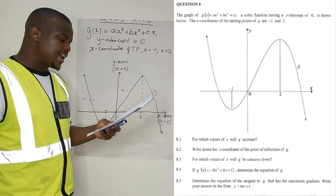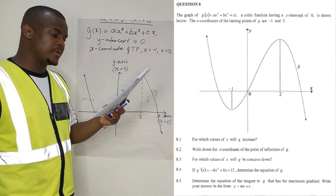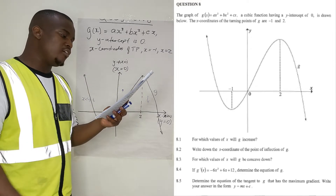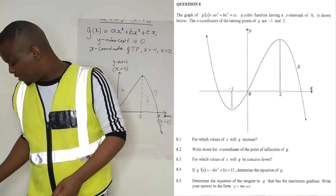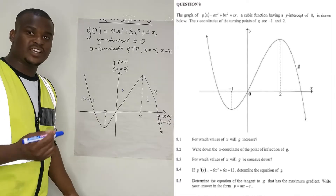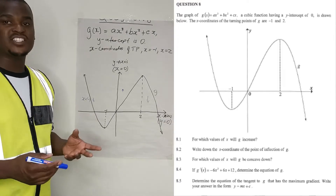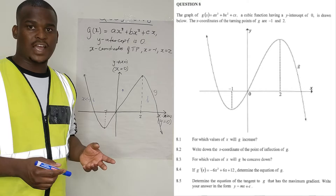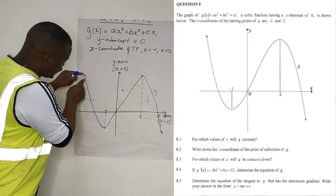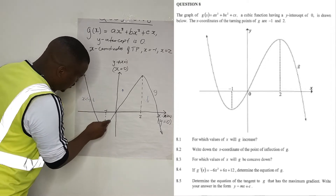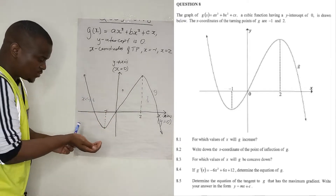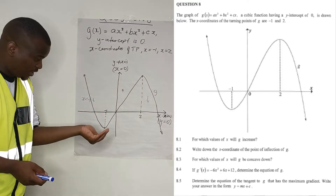8.2 reads: write down the x-coordinate of the point of inflection of g. The point of inflection is when your graph changes concavity. If you look at the graph, from one part it's concave up — it's looking upwards. Then at some point it becomes concave down, looking downwards.